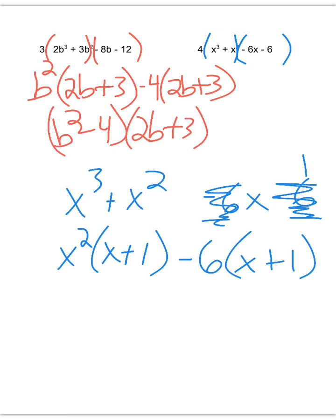Negative 6 times x, negative 6x. Negative 6 times positive 1, negative 6. So we're good. Now, put it back together and we have x squared minus 6 times x plus 1.